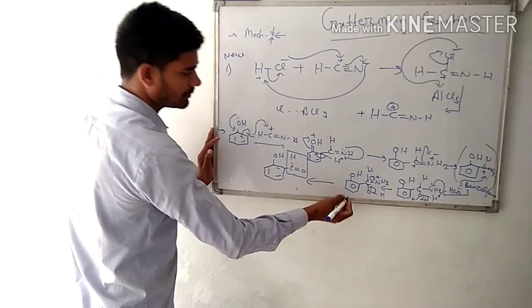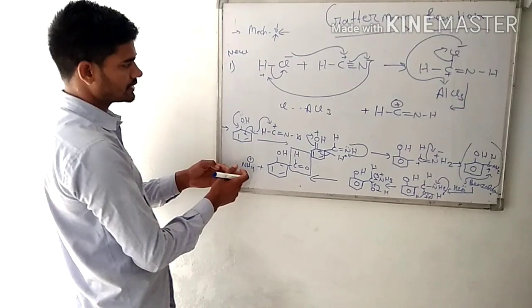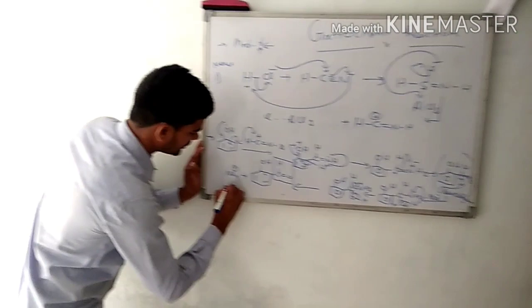This is the formyl group attached to the aromatic system, and ammonia is expelled. This ammonia and chlorine react to form ammonium chloride.